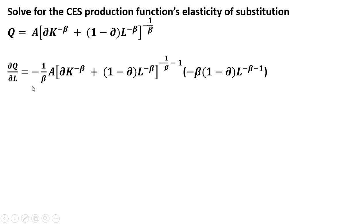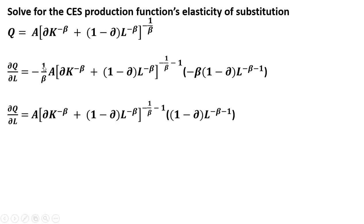The first thing we're going to do is get the marginal product of labor — the partial derivative of Q with respect to L. This exponent over here, this minus 1 divided by beta, I'm bringing that down in front, and then I'll subtract 1 from that exponent. The next step, we take the derivative of what's in brackets with respect to L, bringing down this minus beta. Then minus beta minus 1, and everything else is unchanged. Notice minus 1 over beta and minus beta — those cancel, so we get rid of those beta terms.